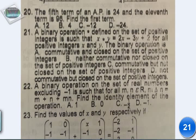A binary operation defined on the set of positive integers is such that x times y is equal to 2x minus 3y plus 2 for all positive integers x and y.